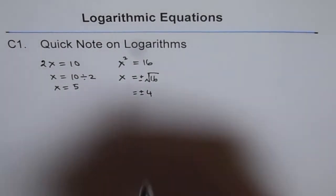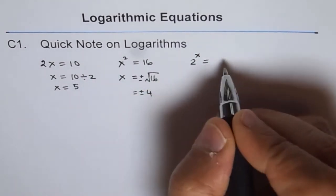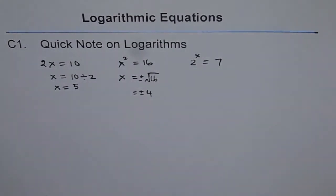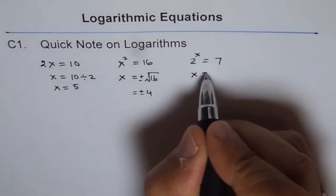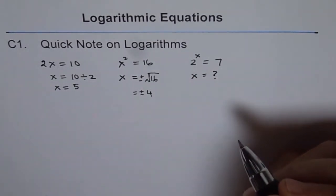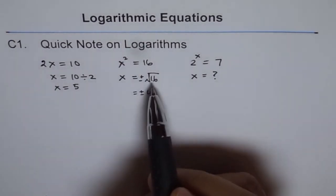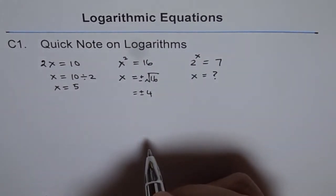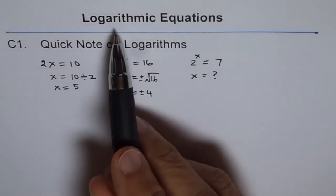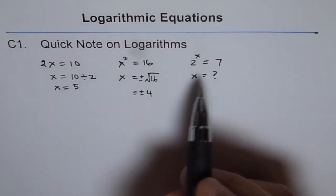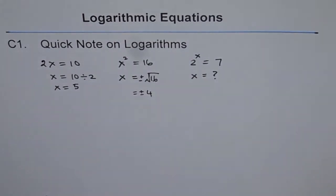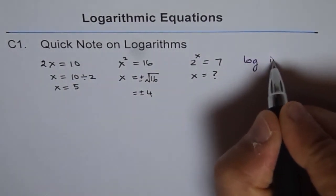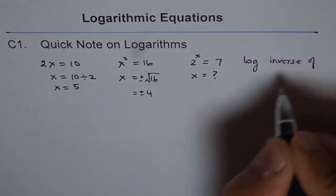But if you have 2 to the power of x equals 7, how will you know what x is? That is a big question. The reverse of square was square root; the reverse of multiplication was division. But the reverse of an exponential function? That we don't know. So this is what led to logs — log is actually the inverse of the exponential function.